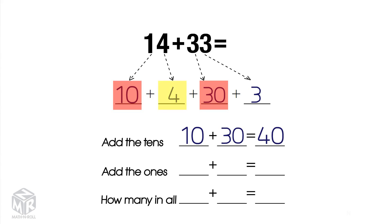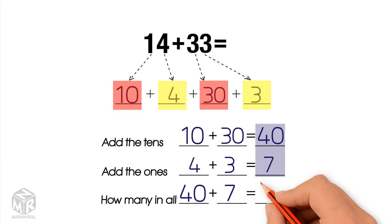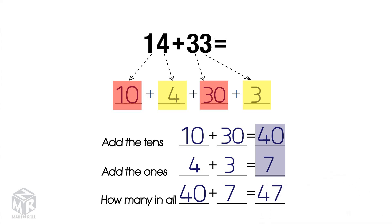Next, we add the ones: 4 plus 3 equals 7. Finally, we add them together: 40 plus 7 equals 47. So 14 plus 33 equals 47.